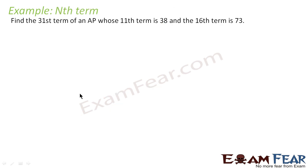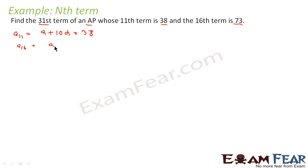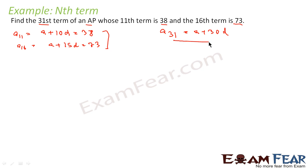We have to find the 31st term of an AP whose 11th term is 38 and 16th term is 73. So a11 equals a plus 10d equals 38, and a16 equals a plus 15d equals 73. We know these two equations, and from them we have to find a31 equals a plus 30d. If we find the values of a and d, we get the answer.